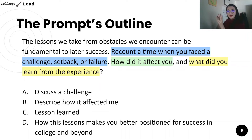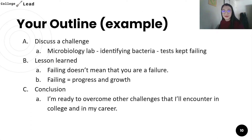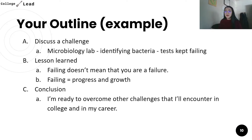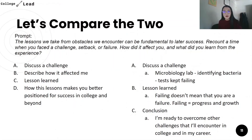Let's say we wrote an essay and the reverse outline we got from it looks something like this. We talked about a challenge — a lab in microbiology where the task was identifying bacteria, but our tests kept failing. We learned that failing doesn't mean you're actually a failure; failing equals progress and growth because you learn from your mistakes and don't repeat them. And in the conclusion, we wrote that we're ready to overcome other challenges in college and our career. Now let's compare these two outlines and see if any sections are missing. Feel free to pause here and give it a go yourself.